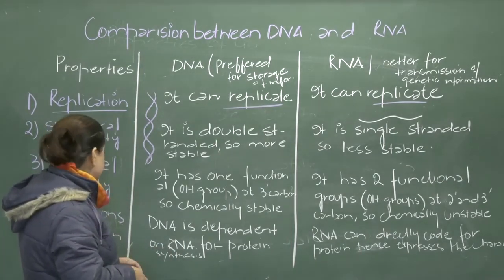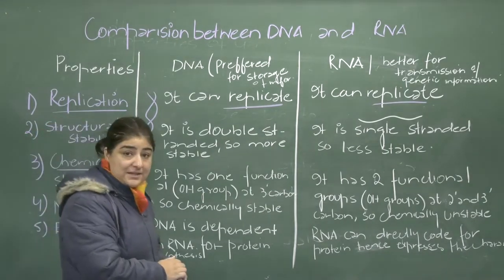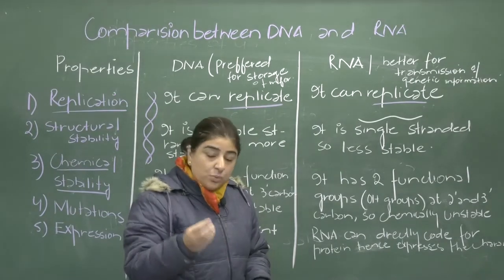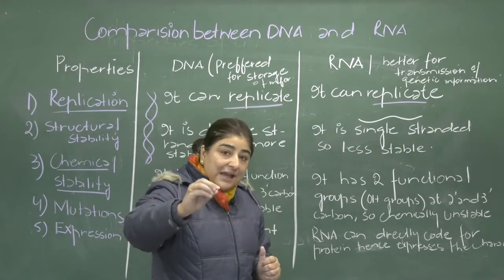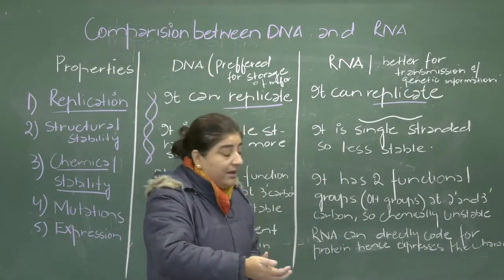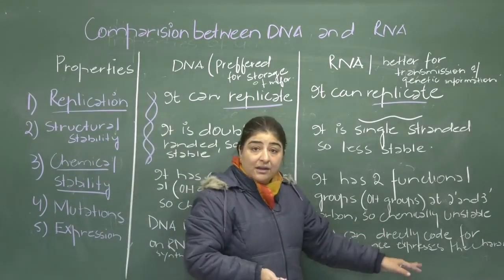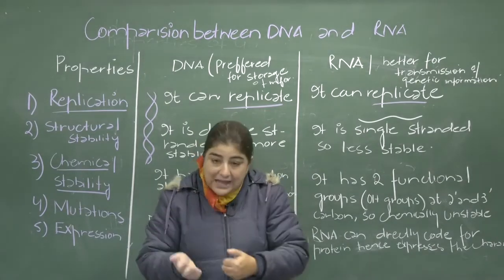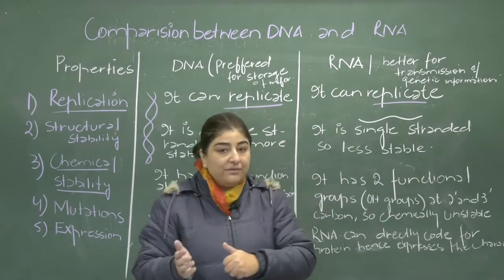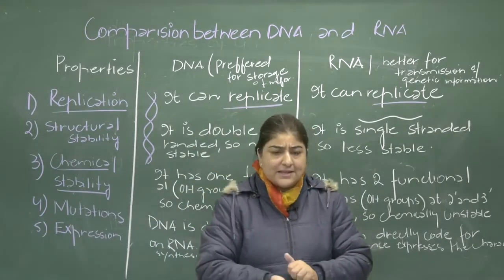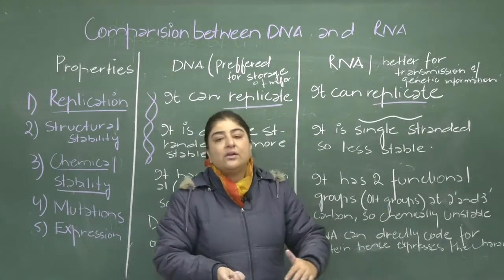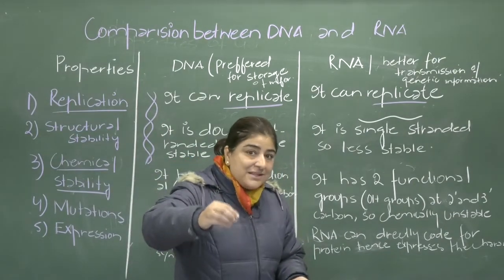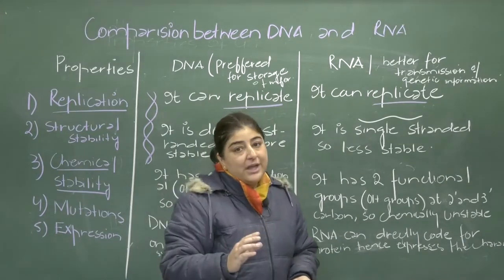Regarding expression: DNA is dependent on RNA for its expression. Whatever is coded in DNA requires RNA for expression. RNA, however, can directly code for proteins. During transcription, messenger RNA is synthesized from DNA, and after post-transcriptional modifications it is taken into the cytoplasm where proteins are synthesized. So RNA can directly code for proteins, whereas DNA needs RNA as a helper molecule to carry information to the ribosomes for protein synthesis.